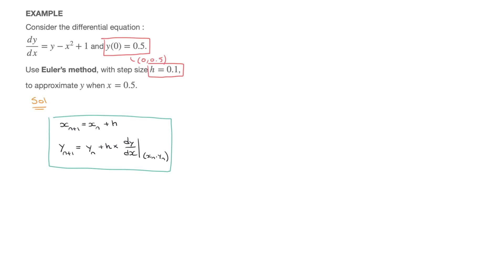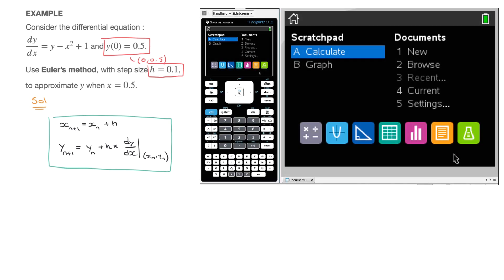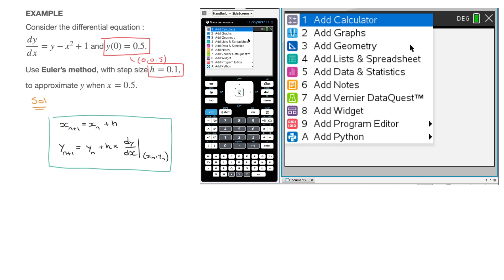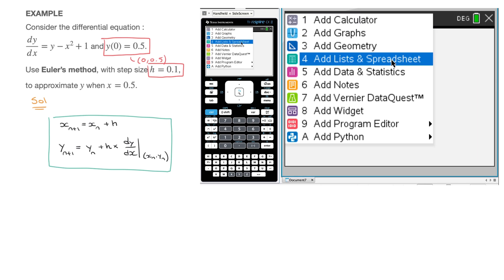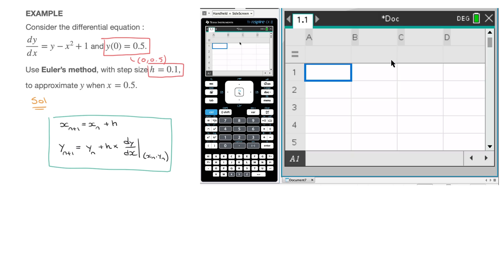Moving over to my calculator, which you can see on the screen now — I'm on the home page of my TI-Nspire CX. The first thing I need to do is open up a spreadsheet. For that, I go under the Documents tab, click on New, then select the fourth option, Add Lists and Spreadsheet.